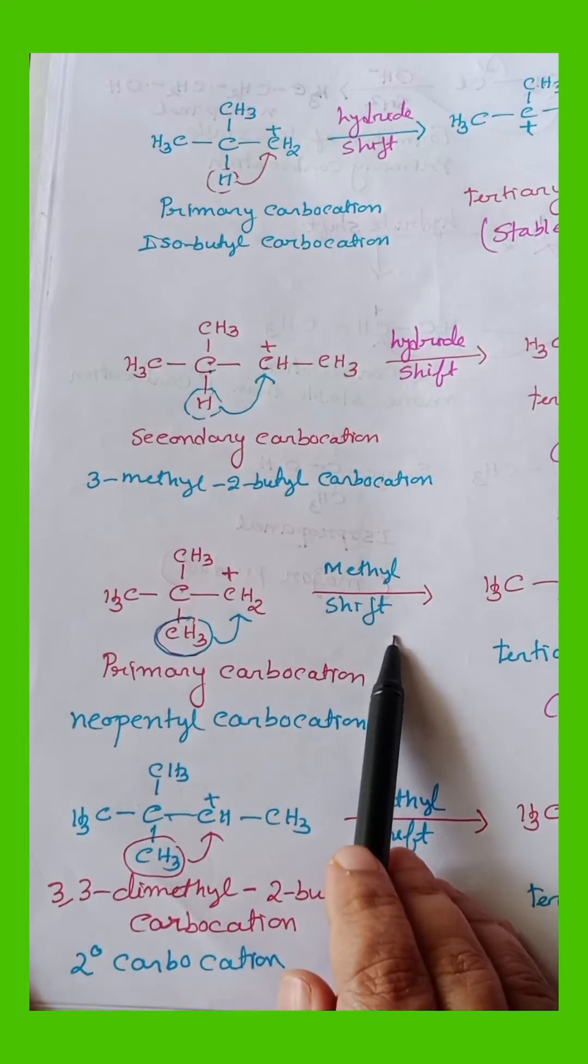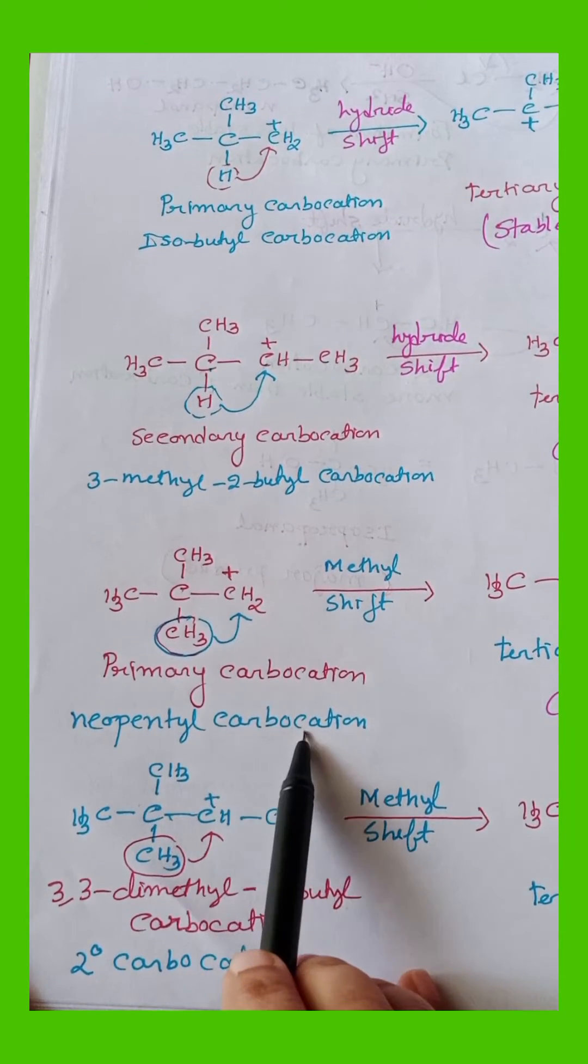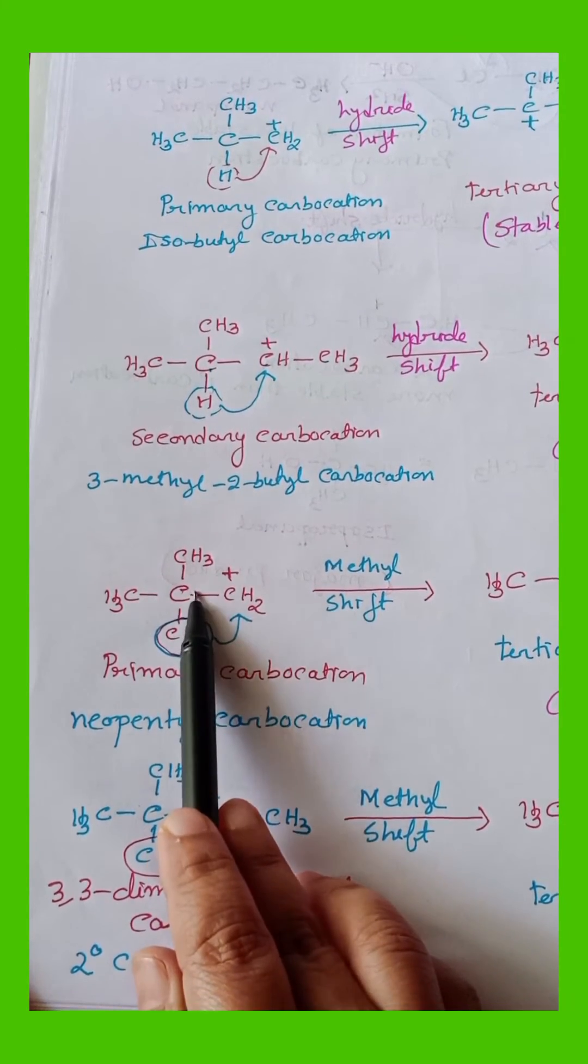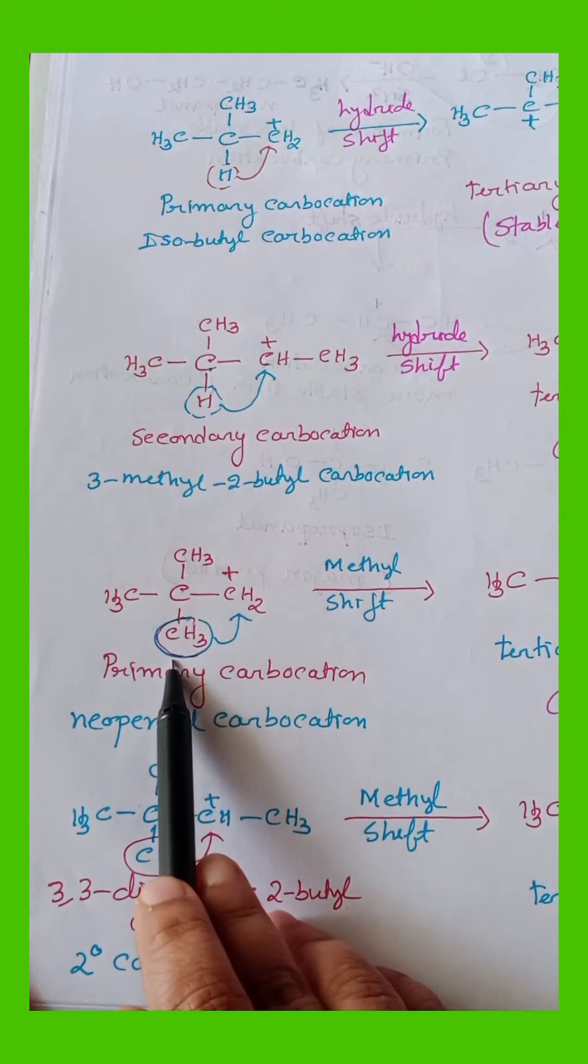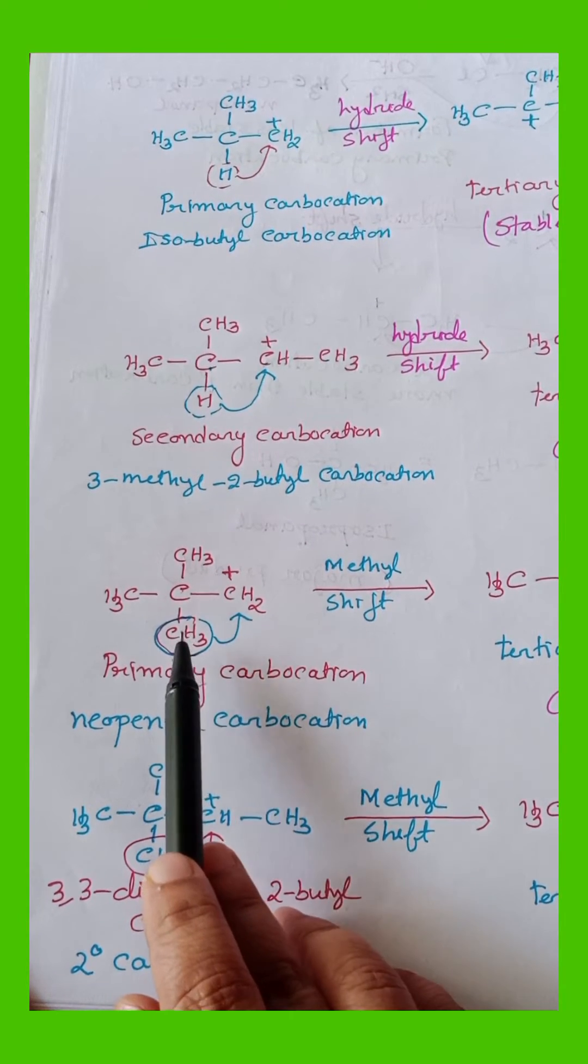Next example is a methyl shift. It is a neopentyl carbocation. This is beta-carbon. Beta-carbon does not contain any beta-hydrogen but it contains one methyl. So, methyl shift takes place to get a stable 3-degree carbocation.